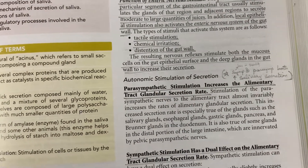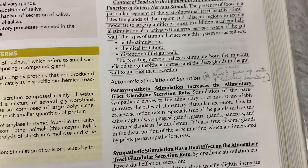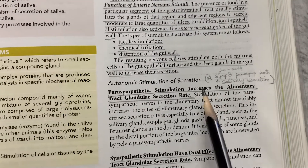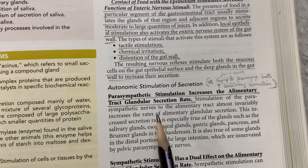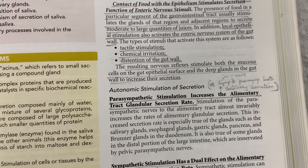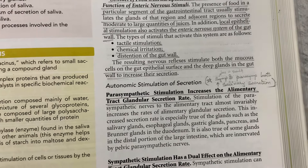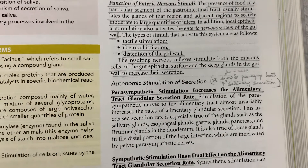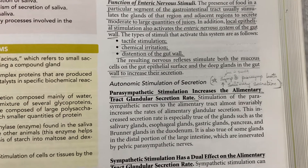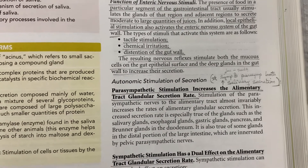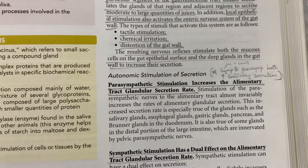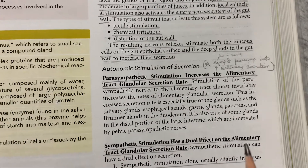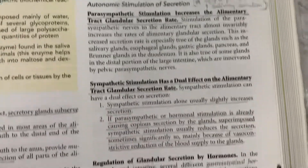Coming to autonomic stimulation of secretion: parasympathetic stimulation increases the alimentary tract glandular secretion rate throughout the body. If there is parasympathetic stimulation, secretion will increase. This is true for almost all glands in the body.